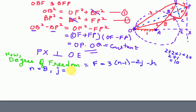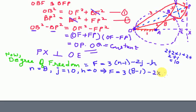Total binary joints j equals 2 + 2 + 2 + 2 + 2 + 2 − 2 = 10, and total higher pairs h equals zero. Therefore, degree of freedom F = 3(8 − 1) − 2(10) − 0 = 21 − 20 = 1. The degree of freedom of the Peaucellier mechanism is 1, meaning it requires only one input for the straight line output, which is provided by link 2, the driving link.